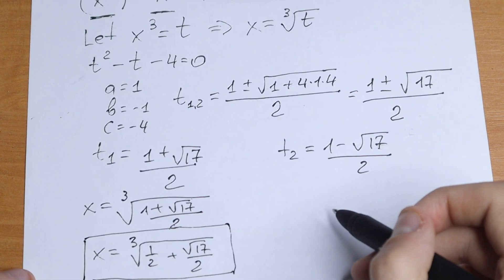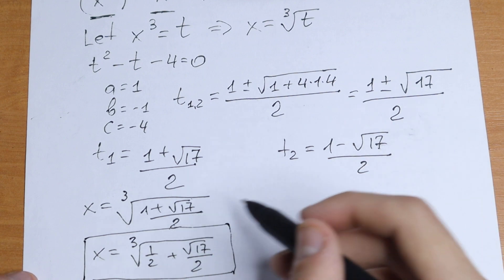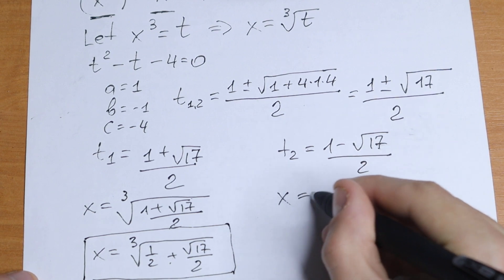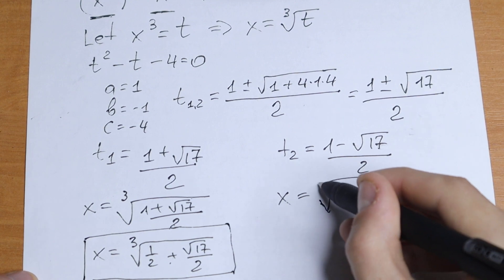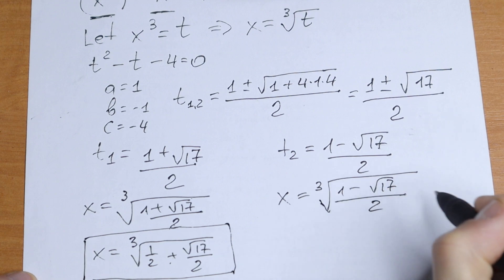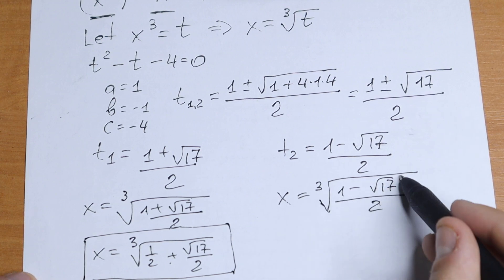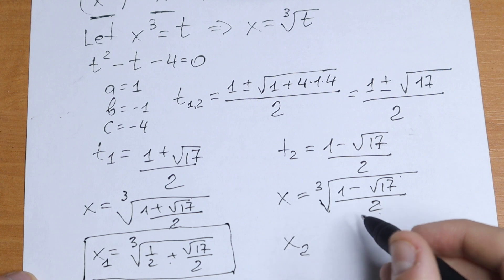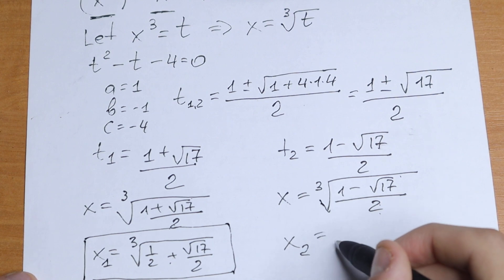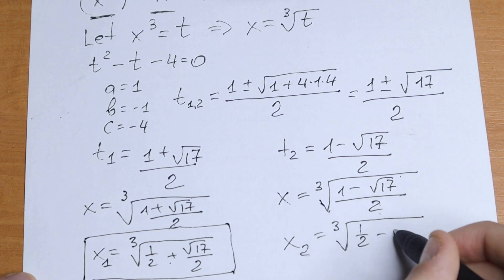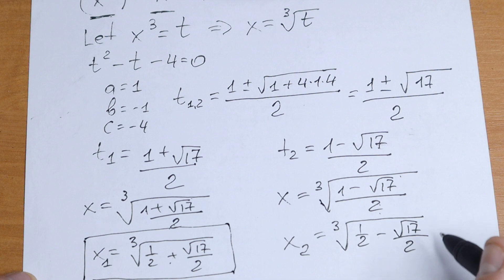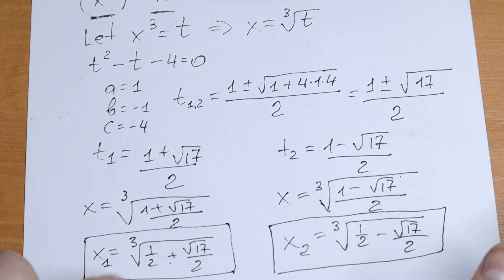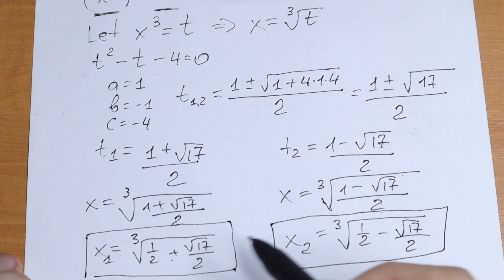Using the same logic, we can find our second root by taking the cube root from t₂. We will have x equals the cube root of 1 minus square root of 17 over 2, and dividing both elements by 2, our second root is x equals the cube root of one half minus square root of 17 over 2. Of course there will be more roots — complex roots — but these are the roots in real numbers. So this is our answer.